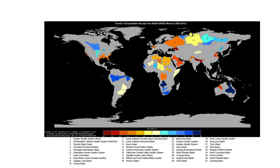Withdrawals are reducing water storage in many of the world's most important aquifers, including those in politically tense regions. This figure shows trends in groundwater storage from 2003 to 2013 in millimeters of water per year. Note that California's Central Valley, India, China, and the Middle East show extensive water withdrawals, while some areas show increased water storage. These data are from NASA's Gravity Recovery and Climate Experiment, GRACE satellites, which measure changes in the mass, that is the water content, of the land surface.